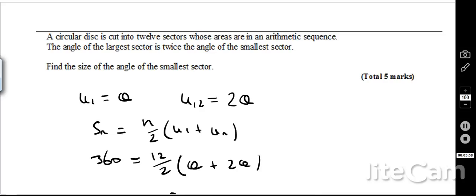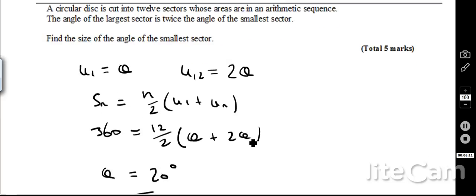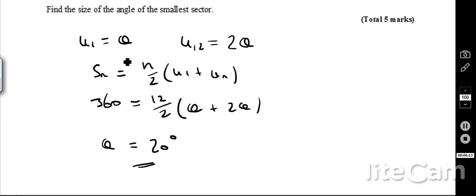Now, here we go, I know that the angles altogether must add up to 360, because it's 360 degrees in a circle, and there's 12 of them, so 12 over 2, and then u1 is theta, and un is 2 theta. And once I've worked out all of that, therefore, I can simplify that, so theta must be equal to 20 degrees.